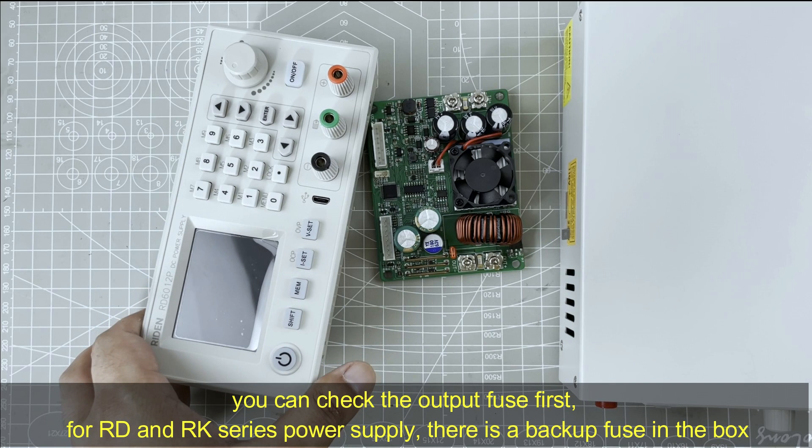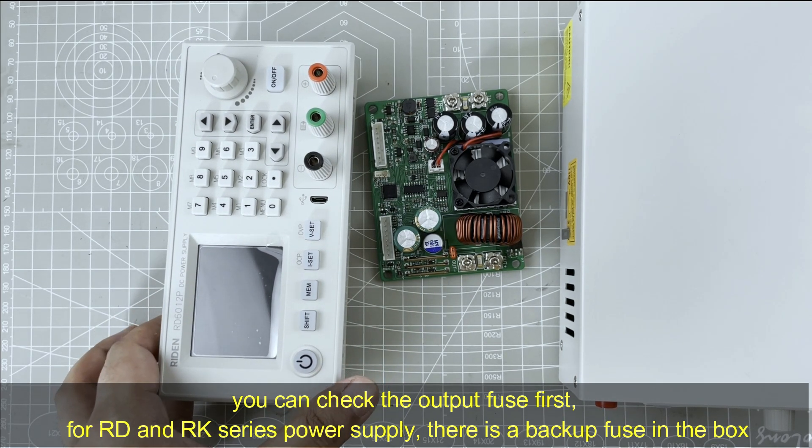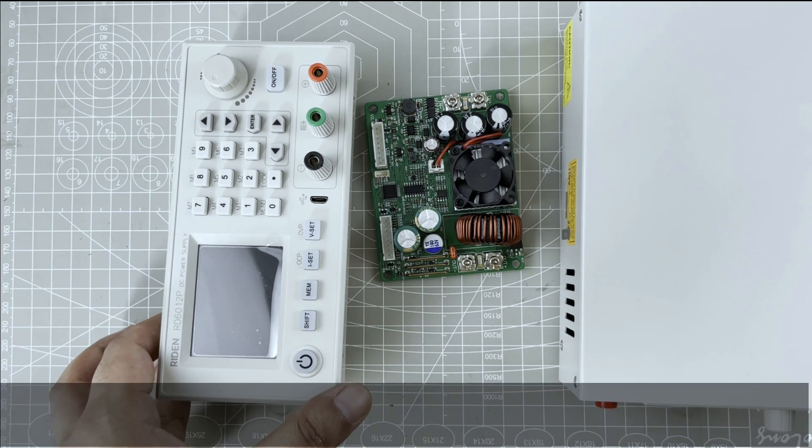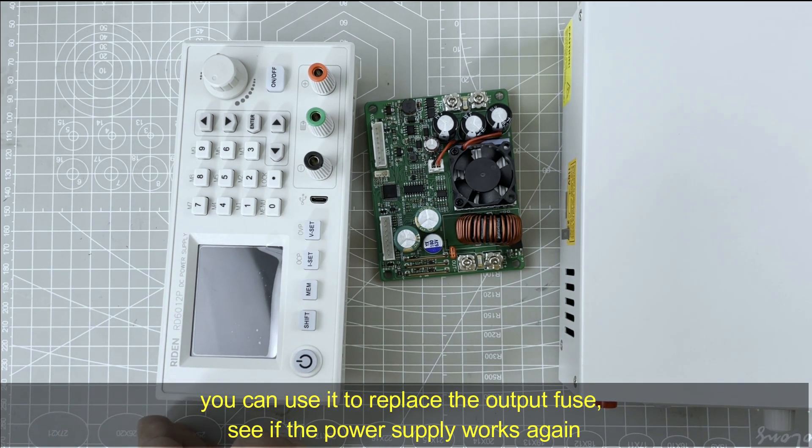For RD series and RK series power supply, there is a backup fuse in the box. You can use it to replace the output fuse. See if the power supply works again.